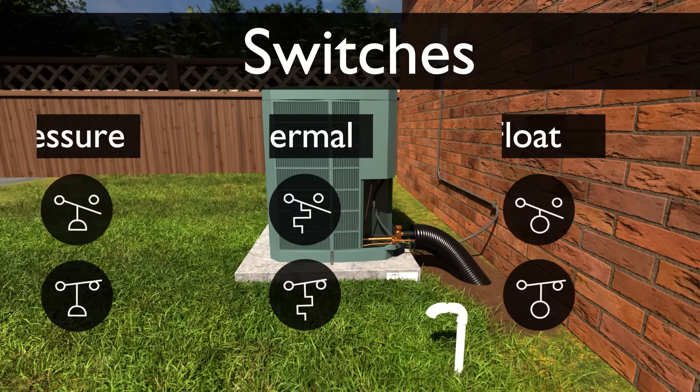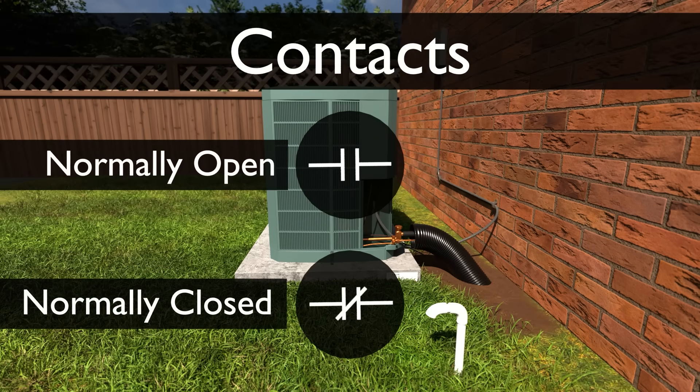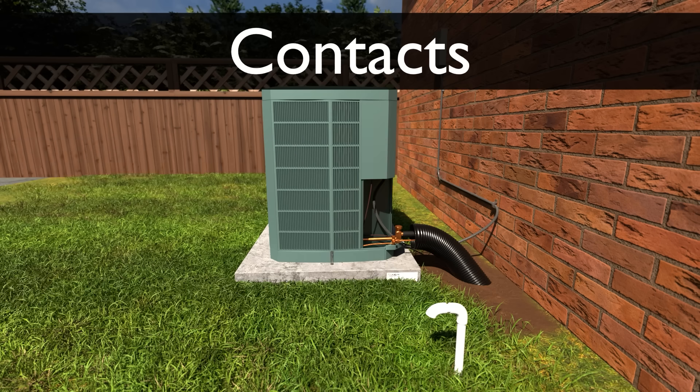We also show a type of switch called contacts that are commonly used in contactors and relays. Here they're in the normally open and the normally closed positions. Open means that there is no path for electricity to move through. Closed means there is an electrical path. This means when a switch is closed, things will turn on, and when it's open, they'll turn off. Switches are power-passing devices. They don't use or consume electricity.